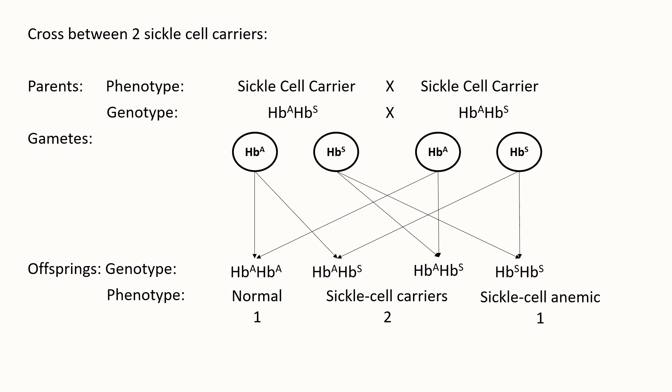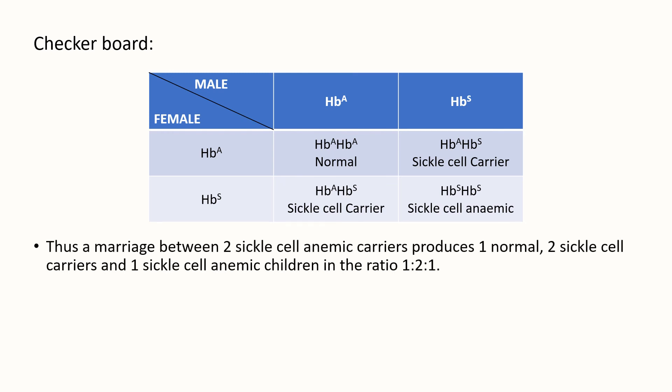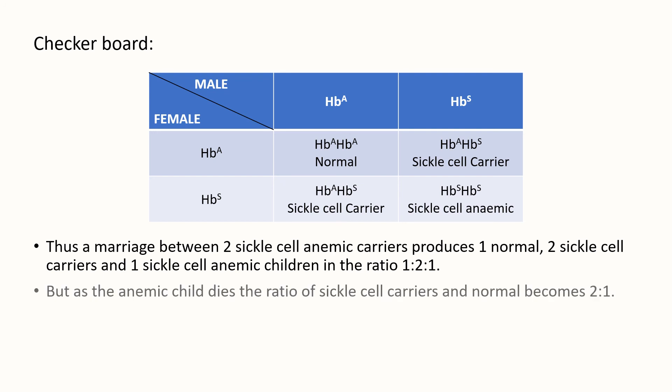These offspring are produced in the ratio of 1:2:1. Here is a checkerboard representation of the same cross between sickle cell carrier parents. Thus, the marriage between two sickle cell anemia carriers produces 1 normal, 2 sickle cell carriers, and 1 sickle cell anemic child in the ratio 1:2:1. But as the anemic child dies, the ratio of sickle cell carriers to normal becomes 2:1.